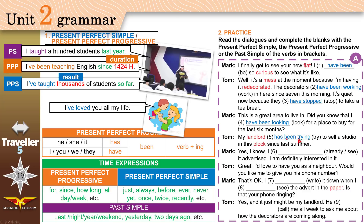'Yes I know, I have already seen it advertised.' It happened in the past and it finished. 'See' is a stative verb, so use Present Perfect Simple: 'I have already seen it.' 'I am definitely interested in it.' 'Great, I'd love to have you as a neighbor — would you like me to give you his phone number?'